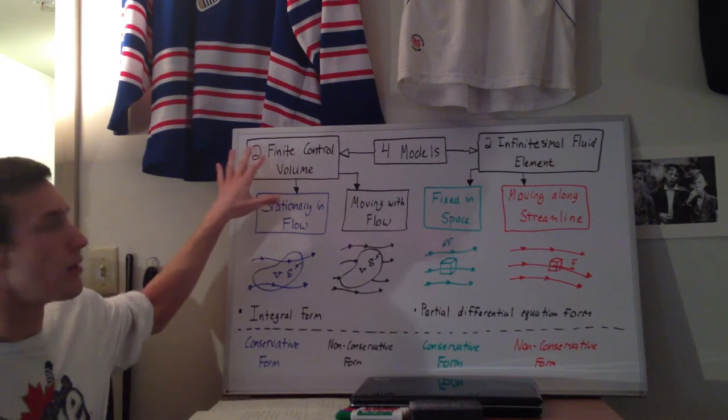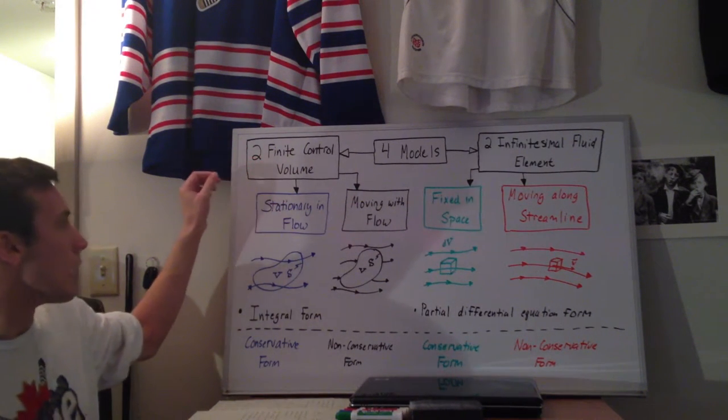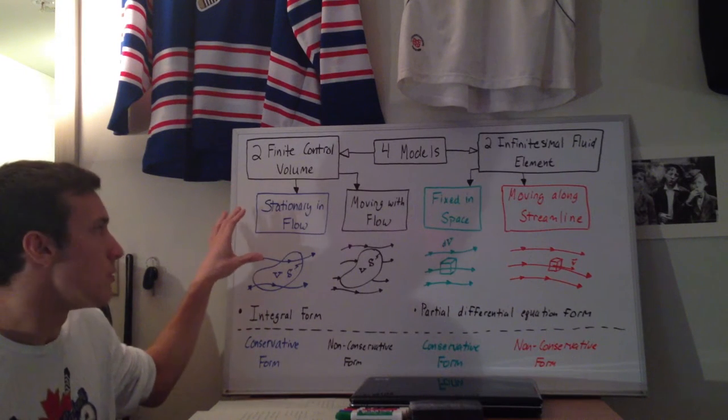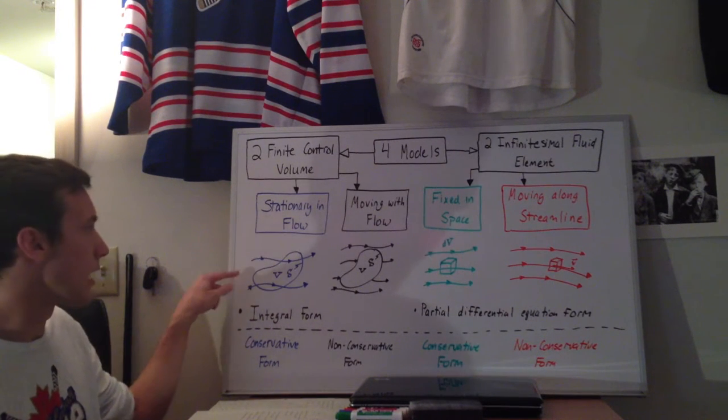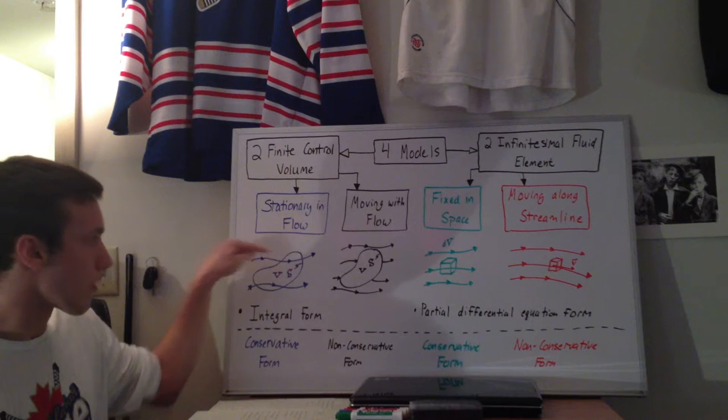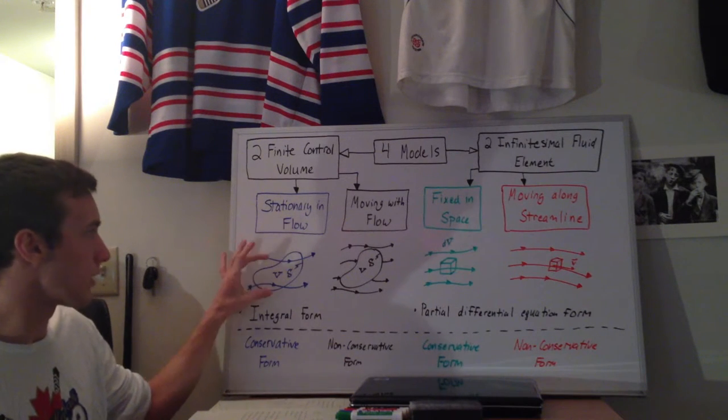Starting over here on the finite control volume, we can either have a finite control volume that is stationary in the flow, such that particles are moving through the volume and it's fixed in space.